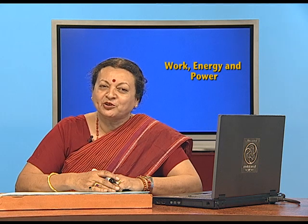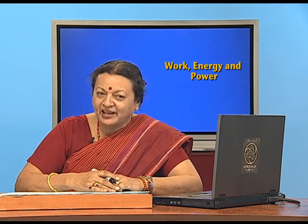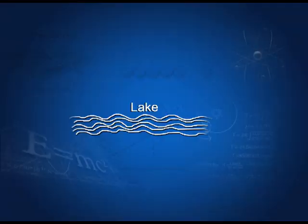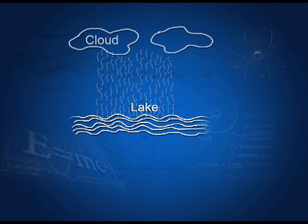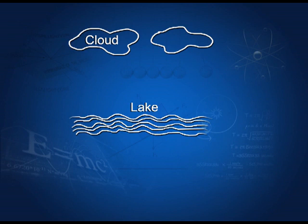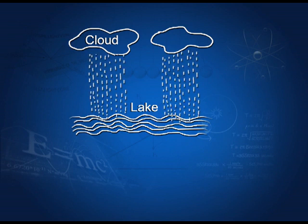We are going to take up one more example which is not only very interesting but also tells us something about what we never ever think of. For example, here is a big lake and water goes up as water vapor and forms these beautiful clouds that we see. And then of course there is rain, and we never even think that there would be some energy involved in formation of the cloud. So what we are going to do now is use our work-energy theorem to find out how much energy is taken up by the water to go right up and form a cloud and come down.